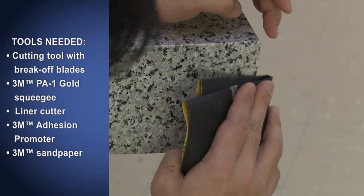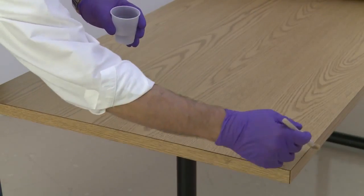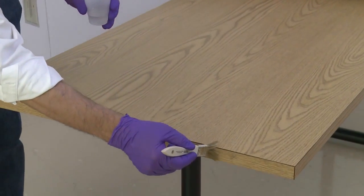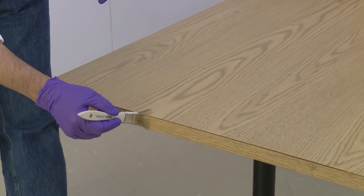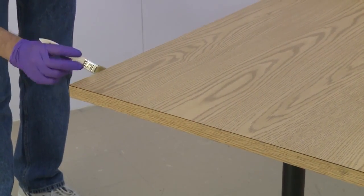To determine the length of the film that you'll need to cover the tabletop, measure the length of the table plus the height of the tabletop edge times 2 plus 8 more inches. Apply 3M brand adhesion promoter to the edges of the clean tabletop using the brush. Allow it to dry for 5 to 15 minutes.